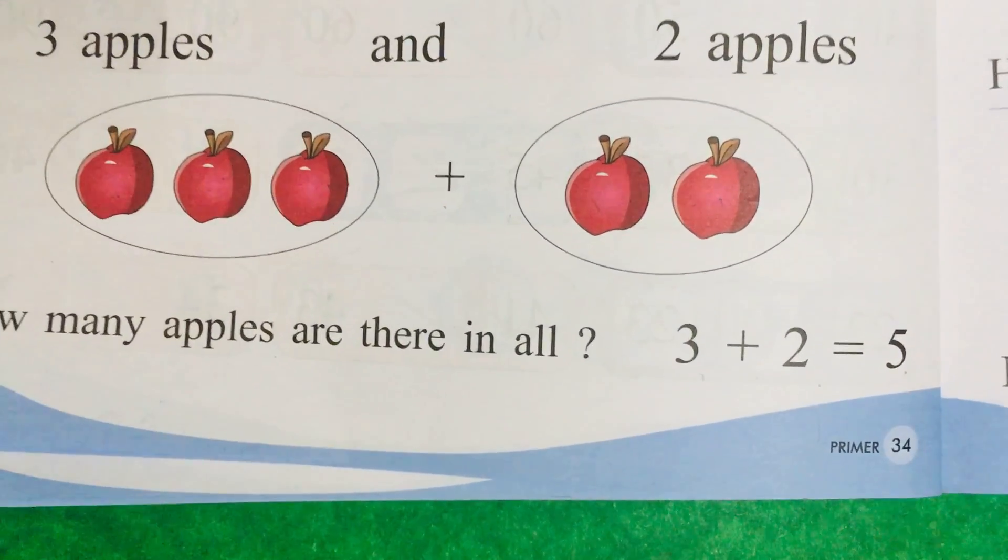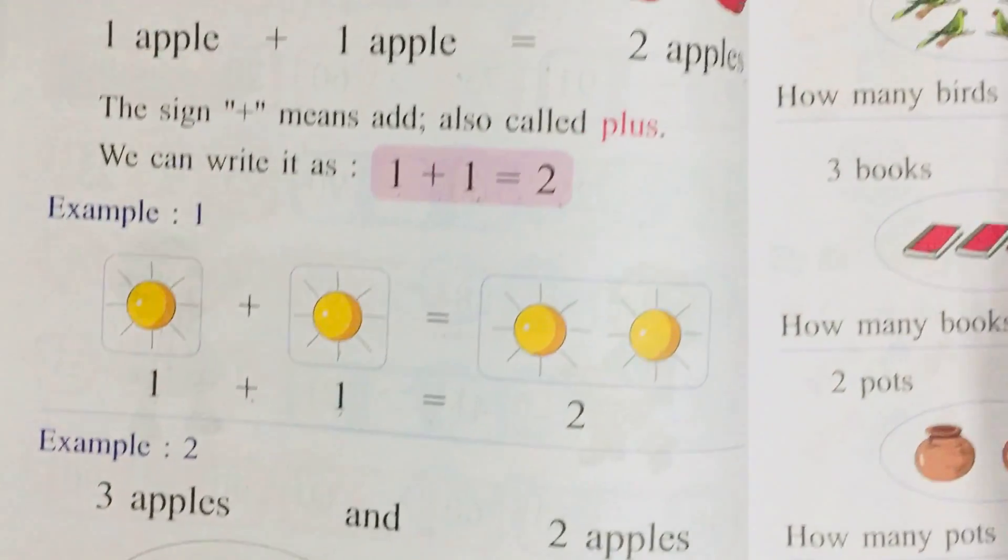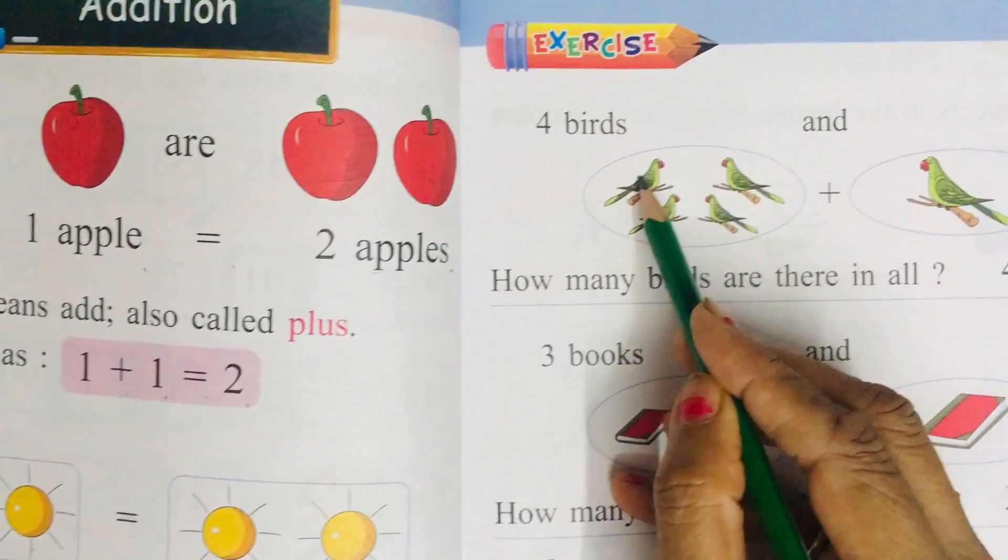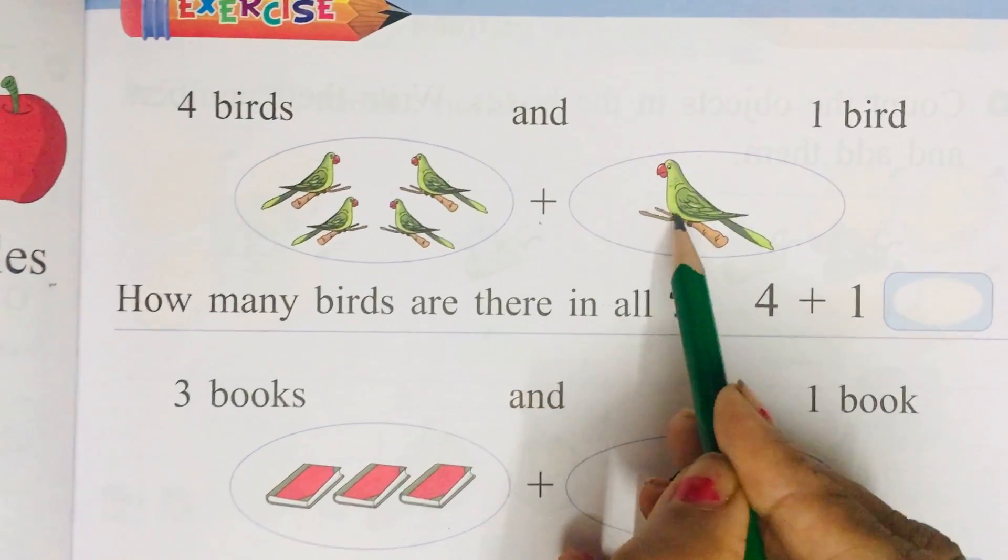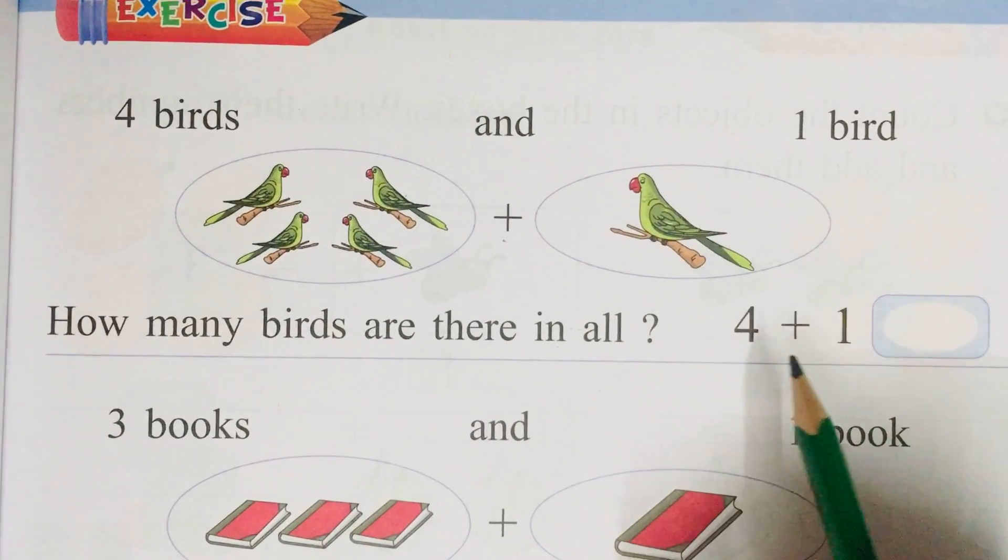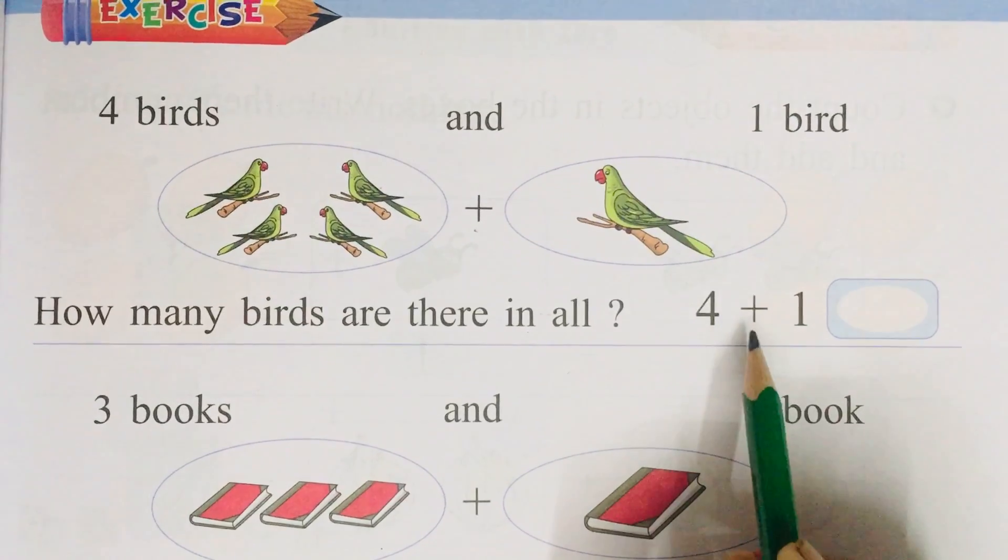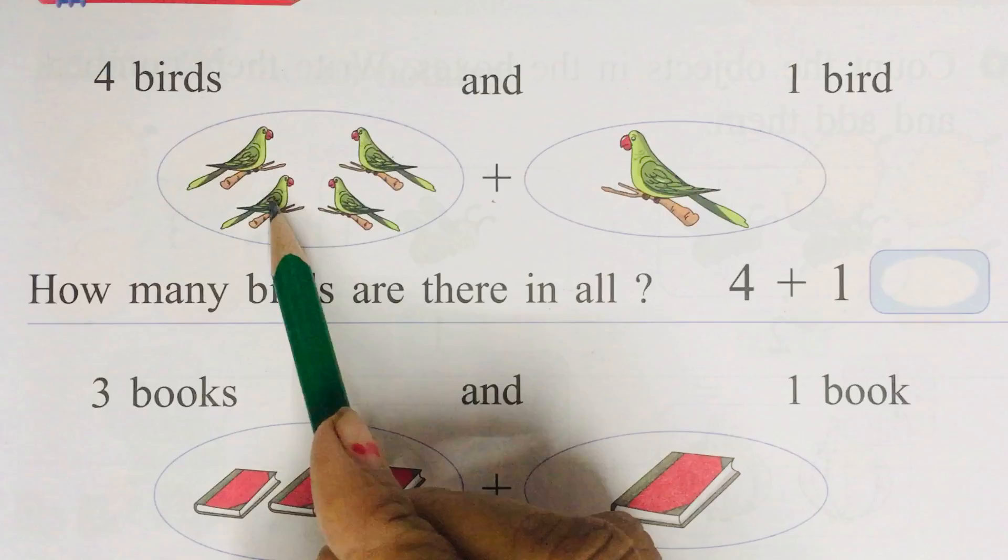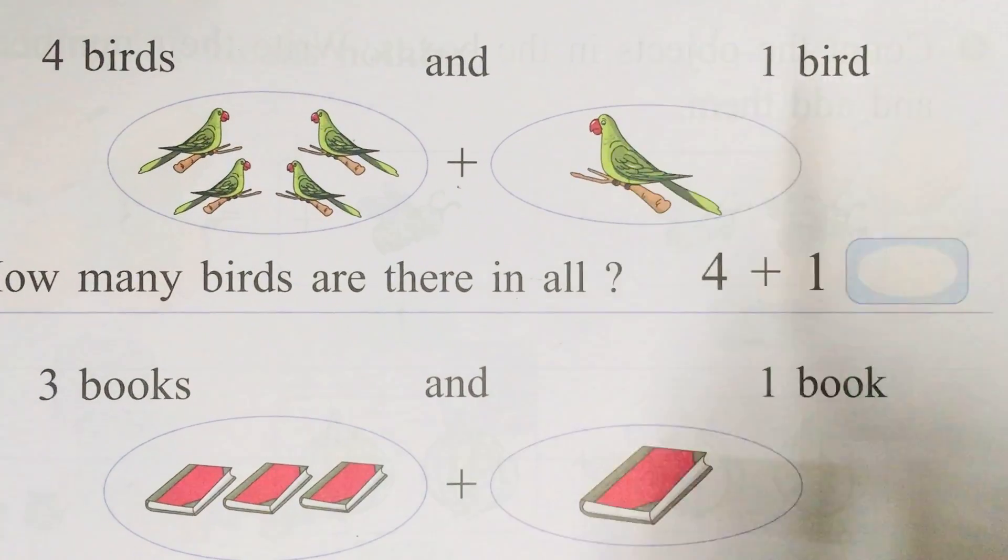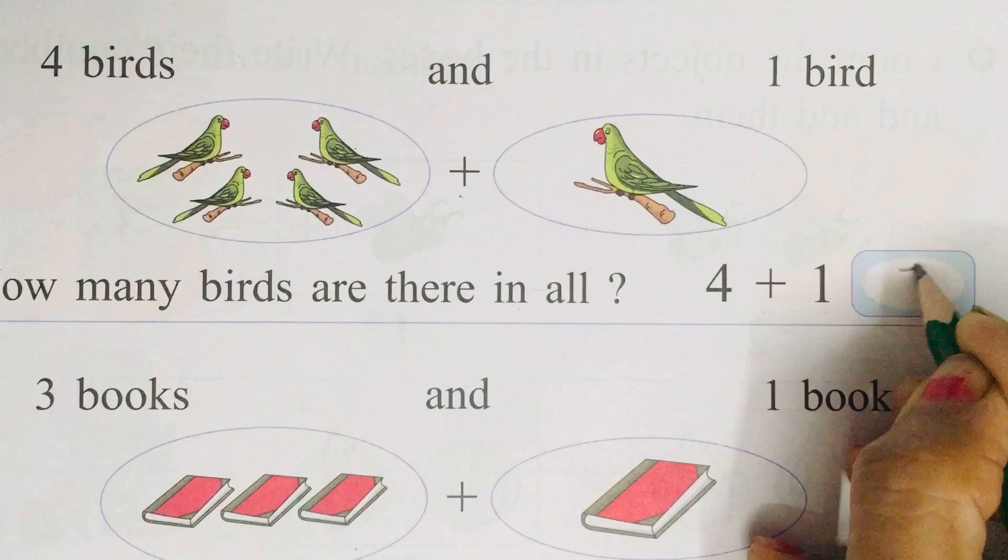Now we will do sums on page number 35. Count these birds, 1, 2, 3, 4 plus 1. So what is written? 4 plus 1. Now count again, 1, 2, 3, 4, 5. So what will we write over here? 5.